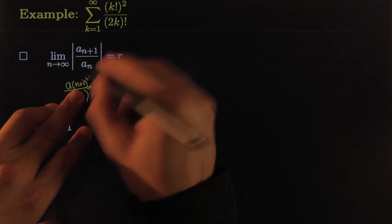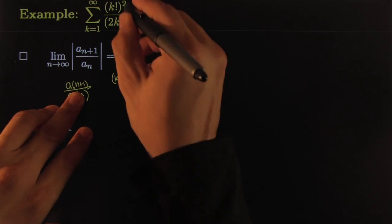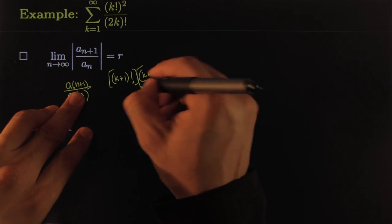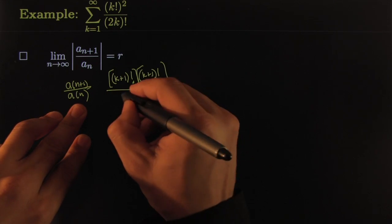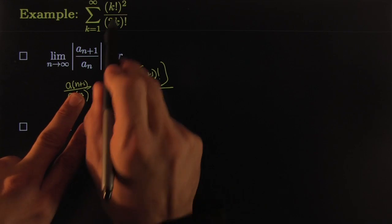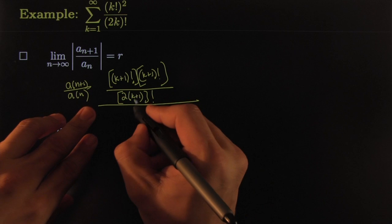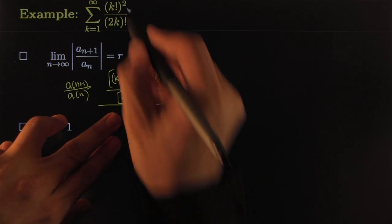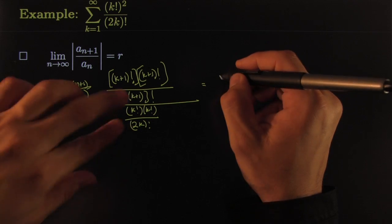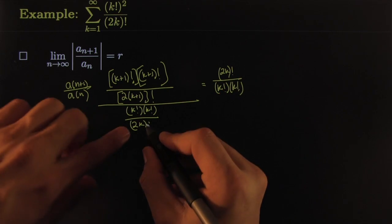I need to plug in k+1 wherever I see k. So the numerator becomes (k+1)! times (k+1)! — that's (k+1)! squared — all over 2(k+1) factorial. I didn't do anything to the bottom yet; I just plugged in k+1. Now I divide by a_n, which is k! times k! — that's (k!)² — all over (2k)!. Flipping the bottom onto the numerator gives me (2k)! over (k!)².